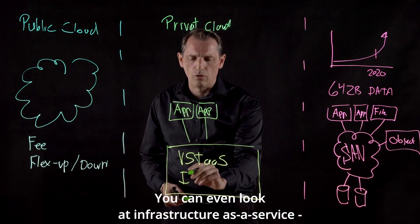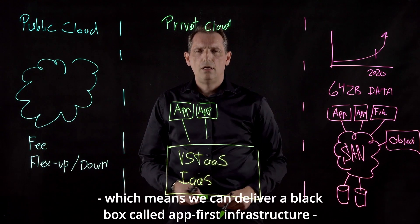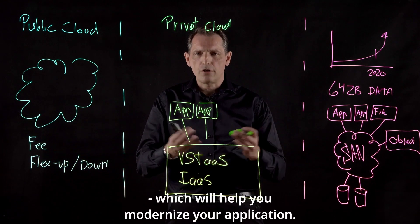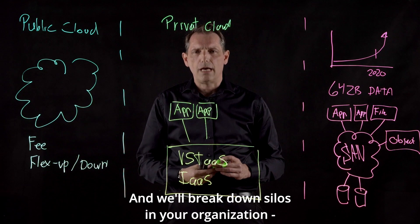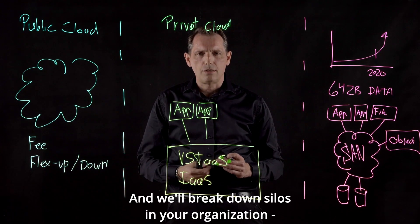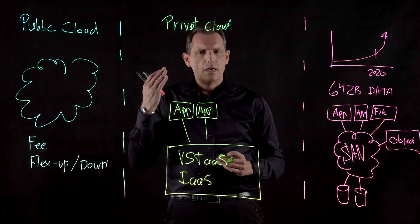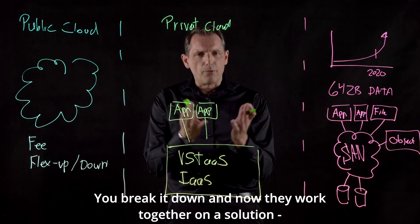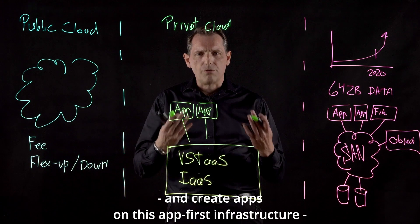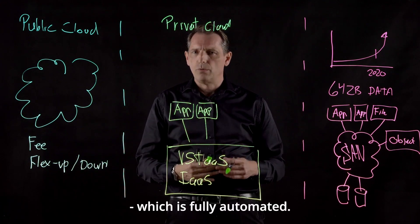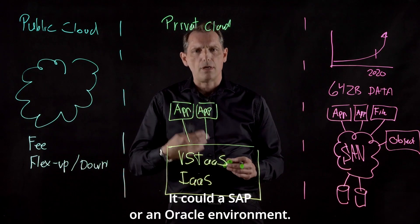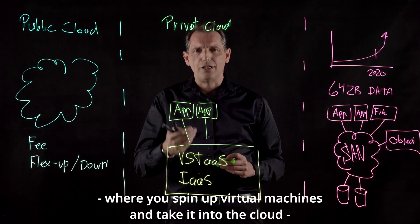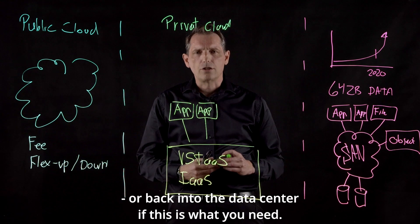You can also look at what we call infrastructure as a service, where we deliver a black box called app-first infrastructure. App-first infrastructure helps you modernize your applications and breaks down silos in your organization between application developers, operational people, and security people. This is what we call DevSecOps — they work together on a solution and create apps on this app-first infrastructure, which is fully automated. It could be a SAP environment, an Oracle environment, or even a VMware environment where you spin up virtual machines and move them to the cloud or back into the data center as needed.